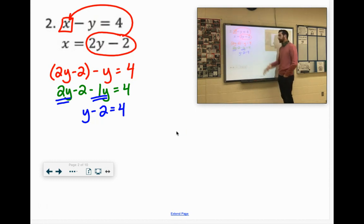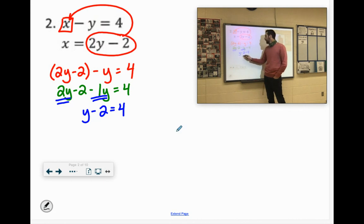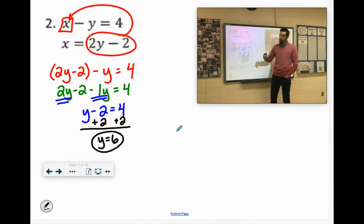Hopefully you can see the next step. We have to get rid of minus 2 by adding 2 to both sides, giving us y equals 6. There's one of our coordinates.